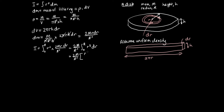Integrating r³ gives r⁴/4, evaluated from 0 to R. Substituting in: I = (2M/R²) × (R⁴/4). Substituting 0 gives zero, so that term drops out. We can cancel R² with two of the R's on top, and the 2 cancels with the 4 to leave 2. This gives I = MR²/2, or one-half MR². We've now derived the moment of inertia of a disc.